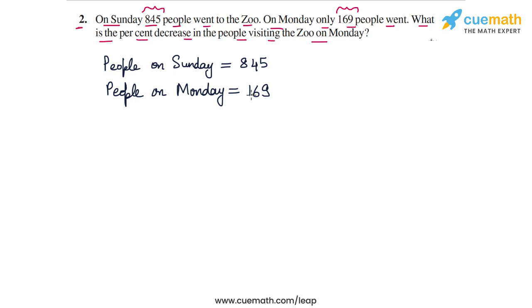So what is the change? What is the decrease in the number of visitors or the number of people? So the decrease is equal to 845, the original number, minus 169, the new number. And this is equal to 676. So from Sunday to Monday, the decrease in the number of people was 676.